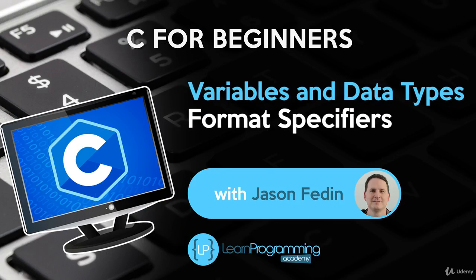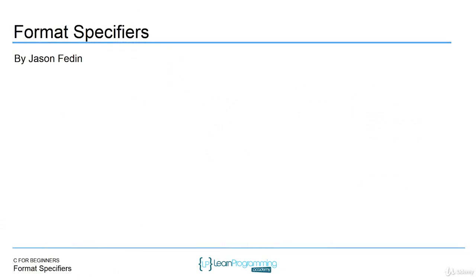Hello and welcome back. In this lecture I want to talk about format specifiers. This is in the section for variables and data types. The reason is it's very important to be able to display the value of variables as output. Format specifiers basically help you do that, and we're going to use them to specify the type of data that we want to display.